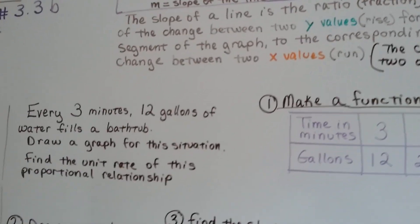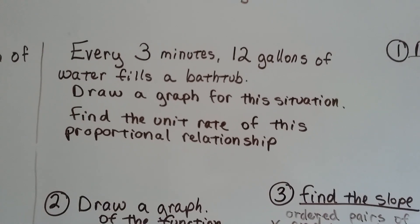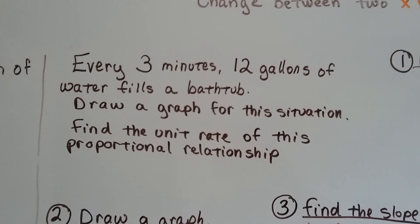So every three minutes, twelve gallons of water fills a bathtub. Draw a graph for the situation, and then find the unit rate of this proportional relationship.